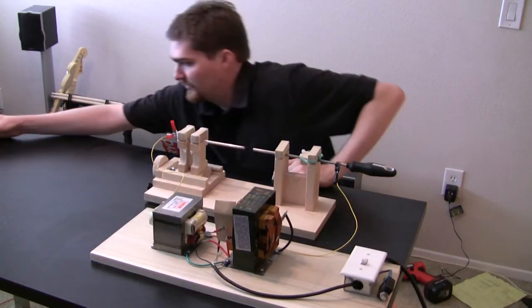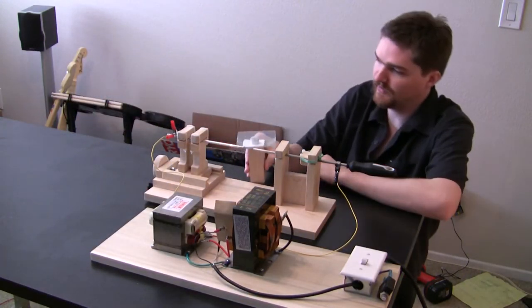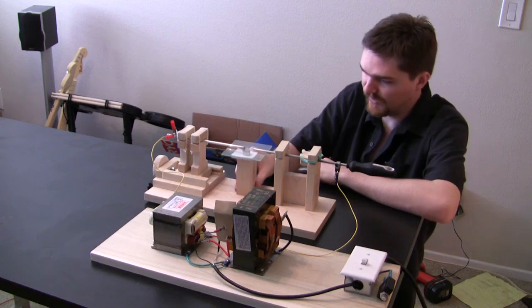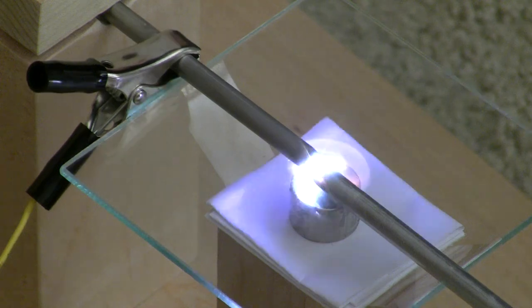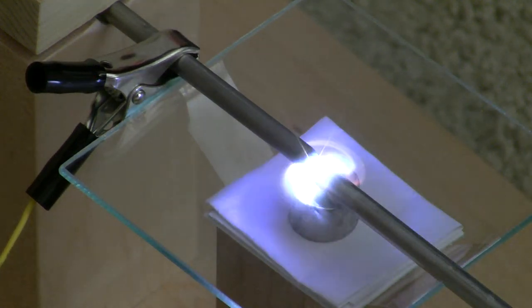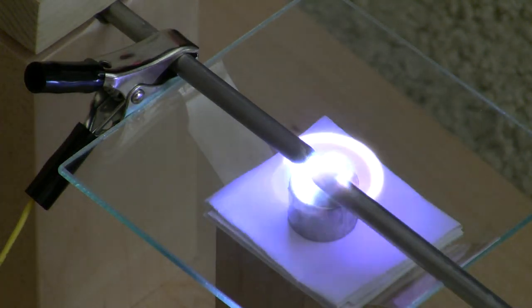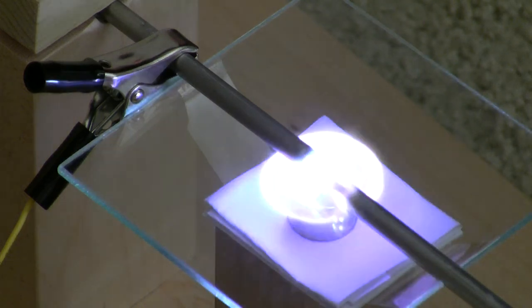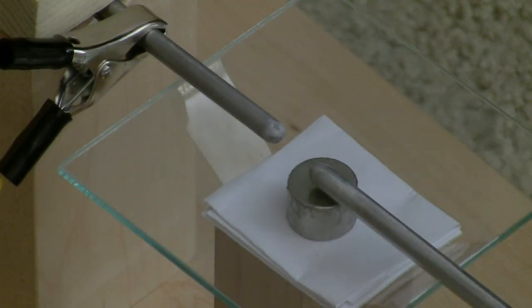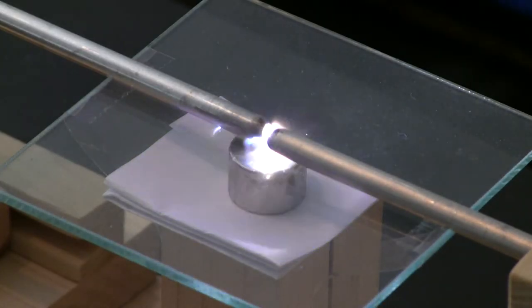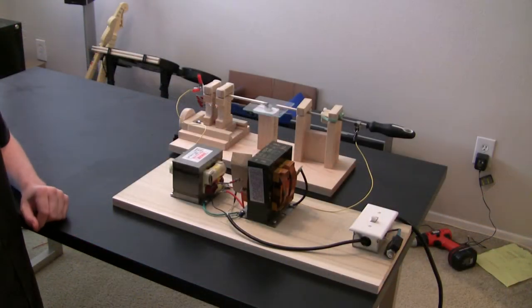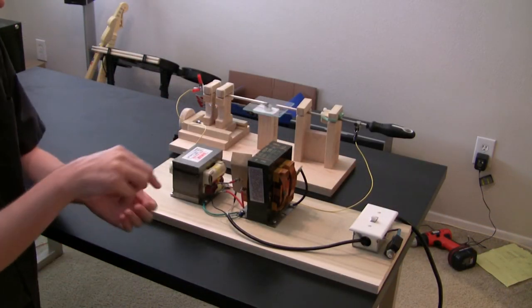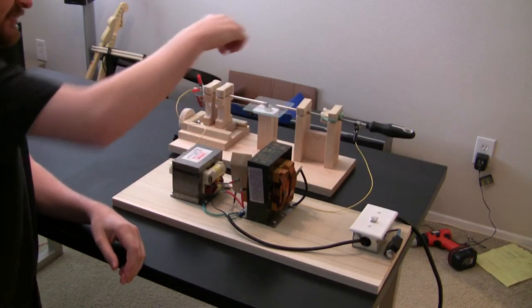So now I'll put this magnet under the spark gap, and show you how the magnetic field affects the mains current. So with the alternating current, you can really see how the discharges blow out to both sides.